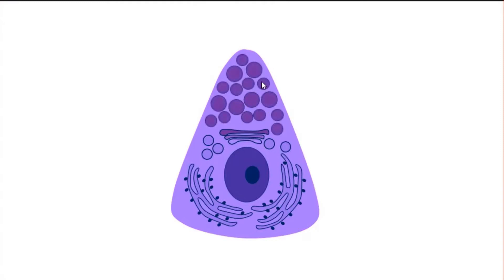Serocytes have a triangular or pyramidal shape and well-developed rough endoplasmic reticulum because they produce a lot of proteins. Proteins are produced in the rough endoplasmic reticulum, then transferred via transport vesicles to the Golgi apparatus, which provides final processing of proteins of saliva. The Golgi apparatus forms secretory vesicles containing secretory products — for example, amylase is present in saliva. Those granules contain different secretory products and are released from the cell via exocytosis.